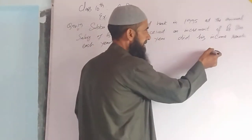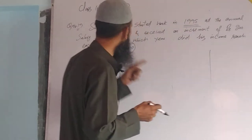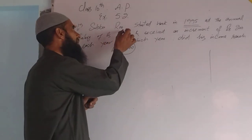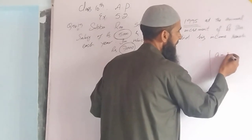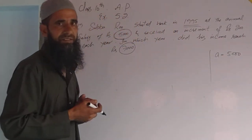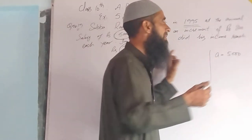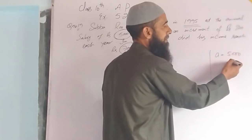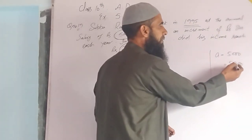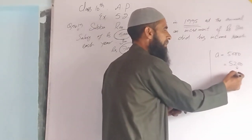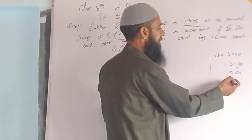In the first year, that is 1995, his annual salary was 5000 — that is a1. After one year, with an increment of 200 rupees, the salary becomes 5200. The next year, adding 200 more gives 5400, and the next year 5400 plus 200 gives 5600.